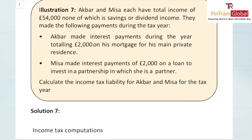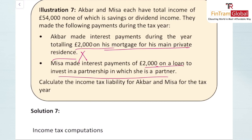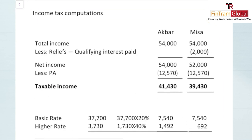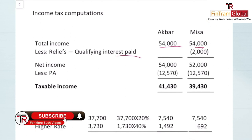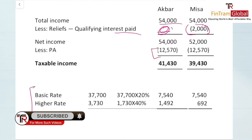Illustration: Akbar and Misa each have total non-savings income of £54,000. Akbar paid £2,000 interest on his mortgage for his main private residence — this is not a qualifying purpose, so no relief is allowed. Misa paid £2,000 interest on a loan to invest in a partnership in which she is a partner — this is a qualifying purpose, so £2,000 is deducted from her total income to get her net income.